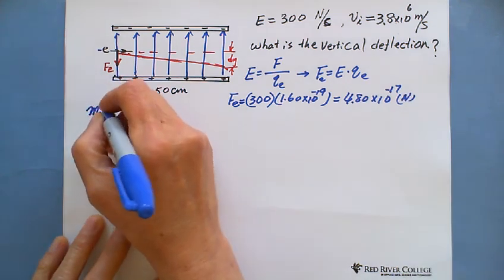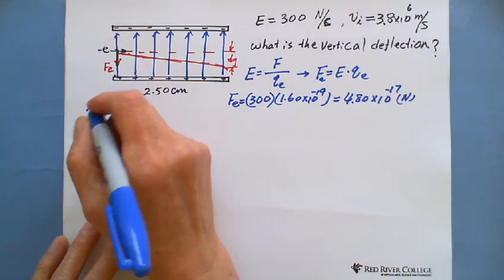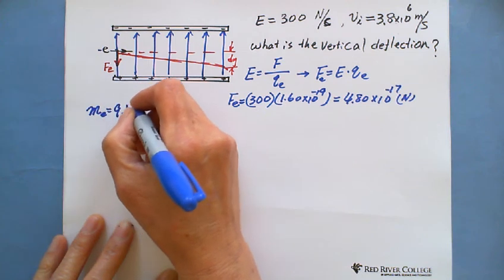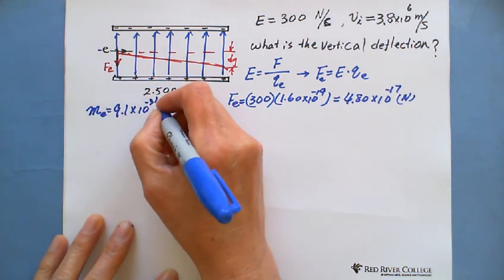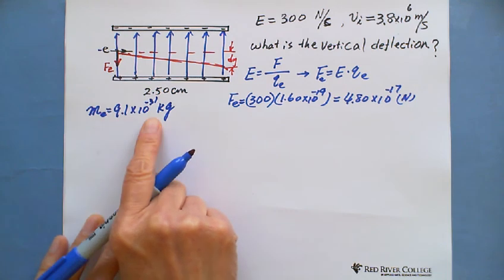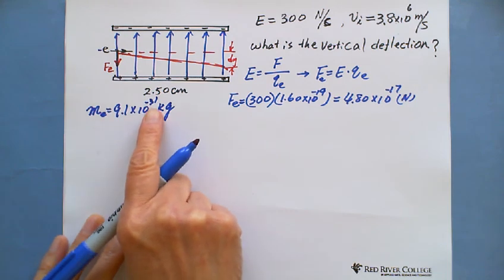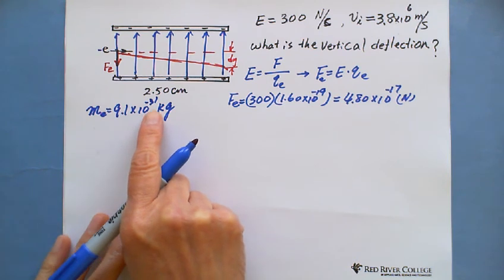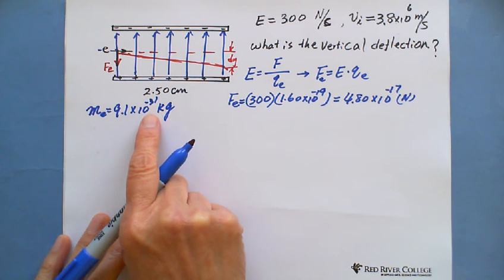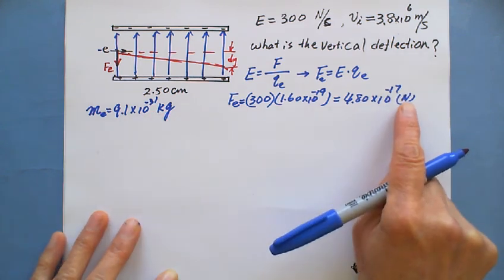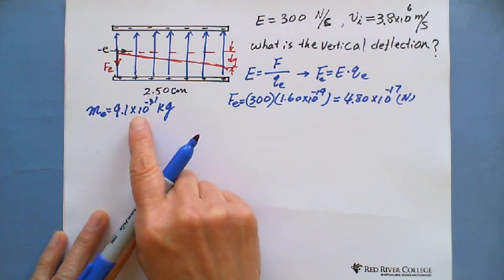And as you can see, the mass of an electron, the mass is 9.1 times 10 to the negative 31 kilograms. That's why compared even with gravity, you multiply 9.8, we get almost negative 30 exponent. And multiply 9.8, you get the 30 exponent newtons and compare with the force negative 17. So we ignore the gravity.